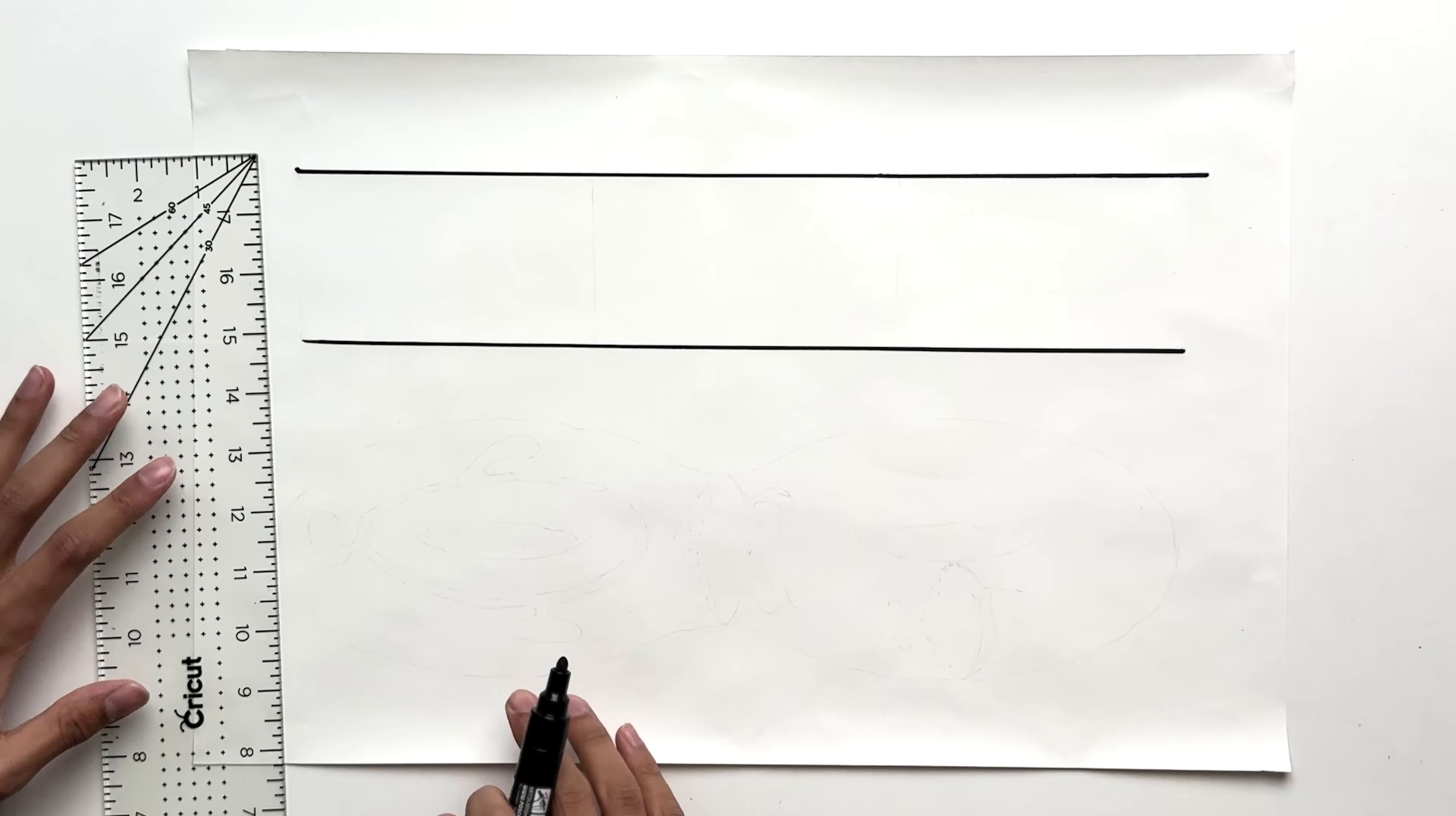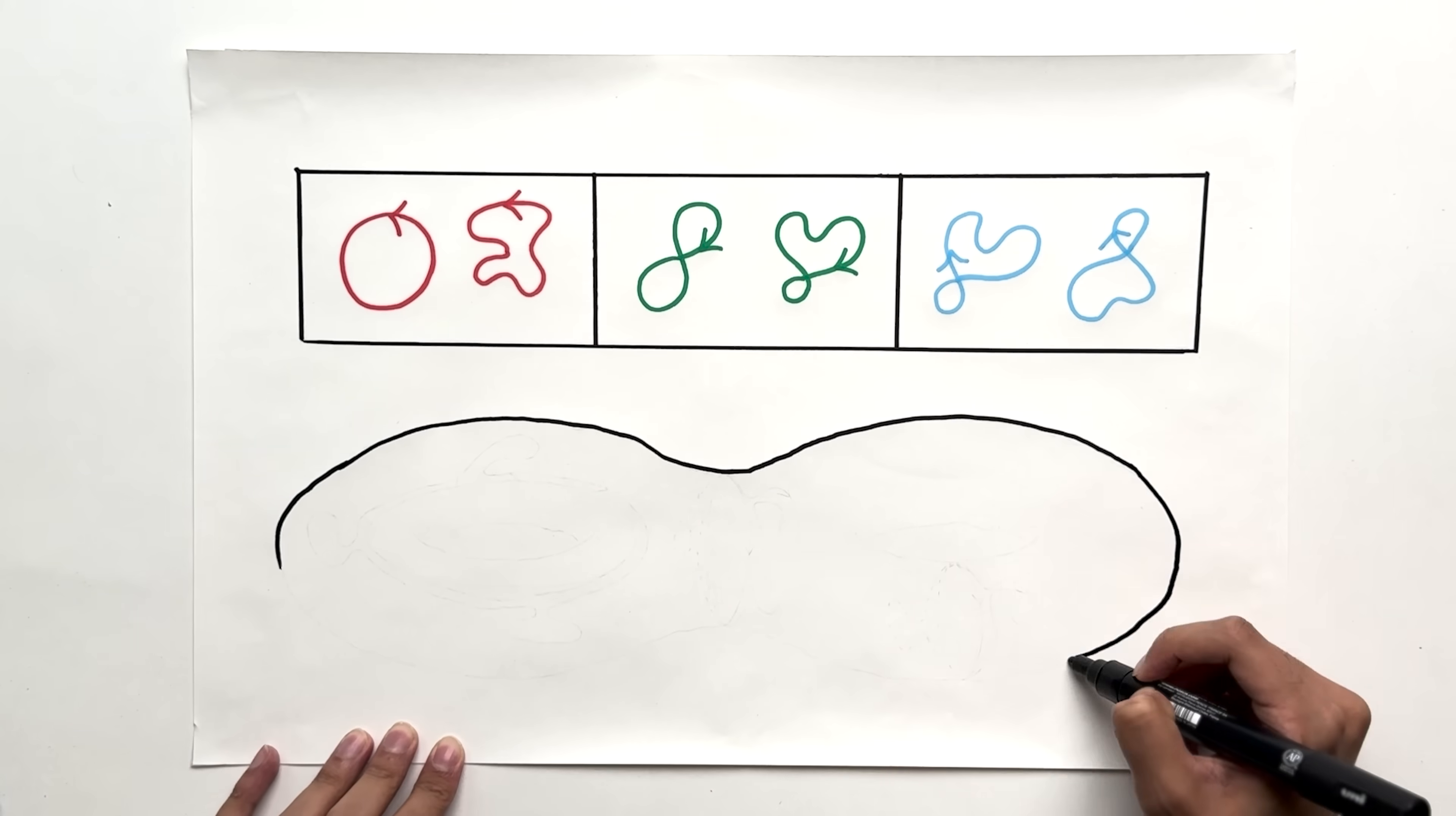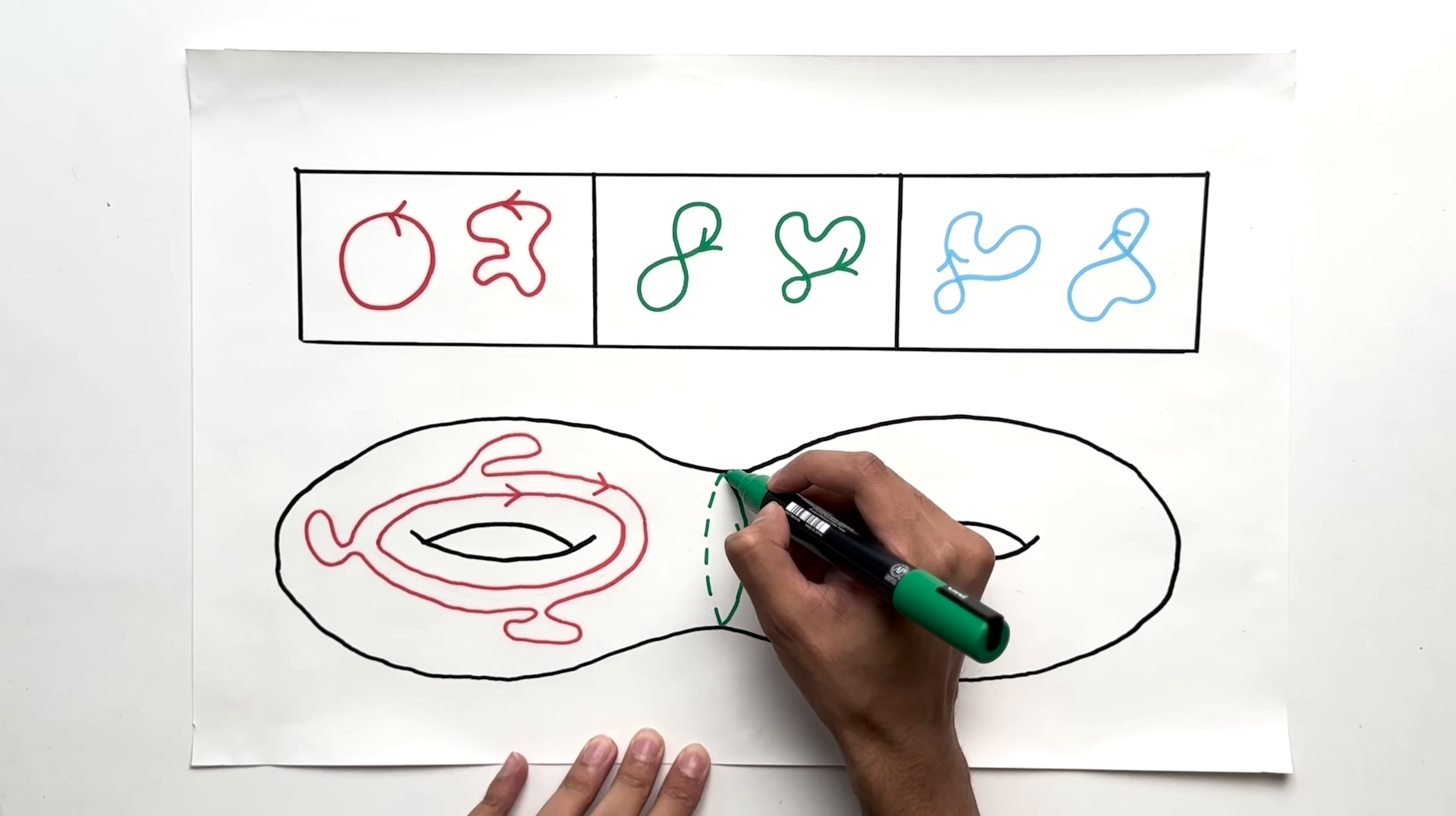We'll now divide loops into packets according to whether they're homotopic to each other or not. So all the loops in the same box are considered homotopic to one another. For example, on the torus, all the loops of the same color are homotopic to each other. If two loops have different colors, they aren't homotopic to each other.